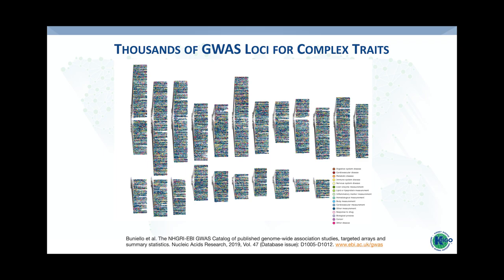When we think about these complex traits, each of the loci discovered in association with susceptibility to a certain trait typically has a relatively small effect size. So individually, these loci are not really helpful for risk stratification. The concept of polygenic risk pertains to building a predictive model that captures the cumulative effects of these common risk alleles.